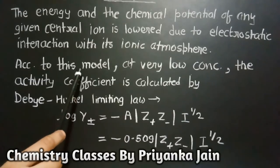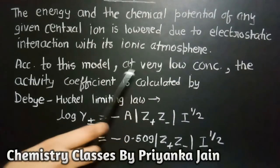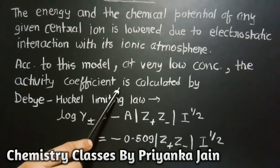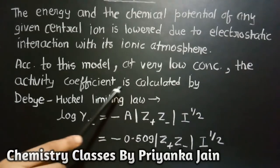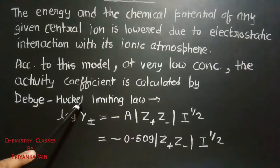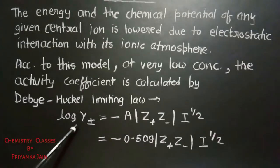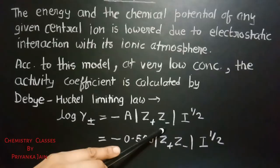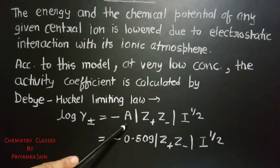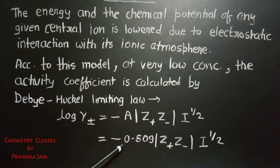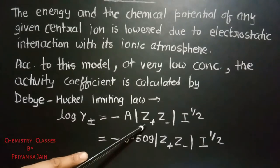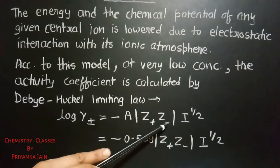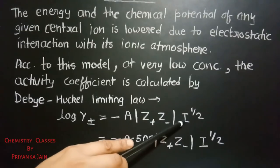According to the Debye-Hückel model, at very low concentration the activity coefficient of any electrolyte solution is calculated by an equation known as the Debye-Hückel limiting law. This equation states: log γ±  equals minus A times Z₊ times Z₋ times the square root of I, where A is a constant with value 0.509 for aqueous solution at 25°C, Z₊ and Z₋ are the charges of the cation and anion, and I is the ionic strength.